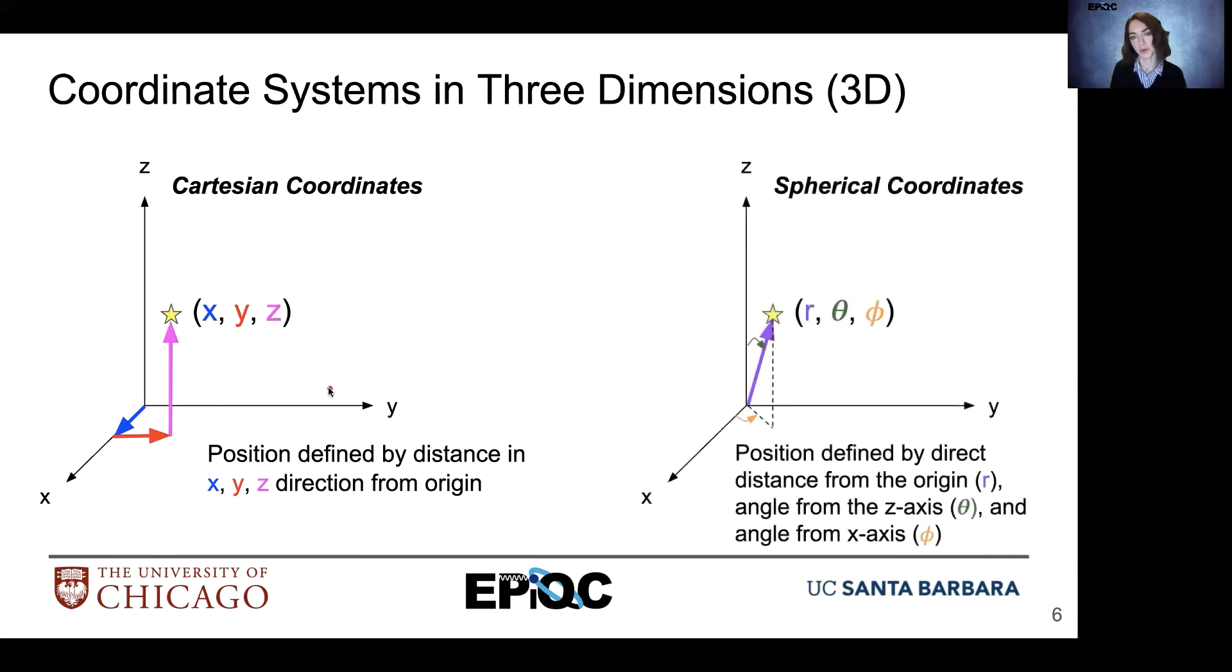We also have spherical coordinates. So with spherical coordinates, we have a position defined by our direct distance from the origin R, as well as an angle from the z-axis, theta. So the angle from the z-axis, theta, and then an angle from our x-axis, phi.